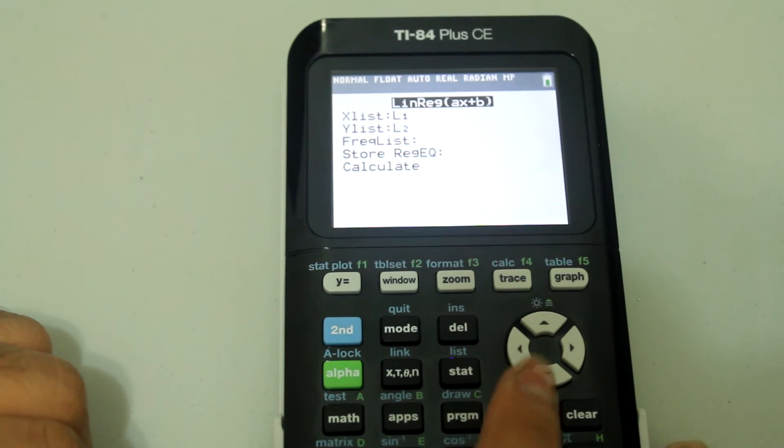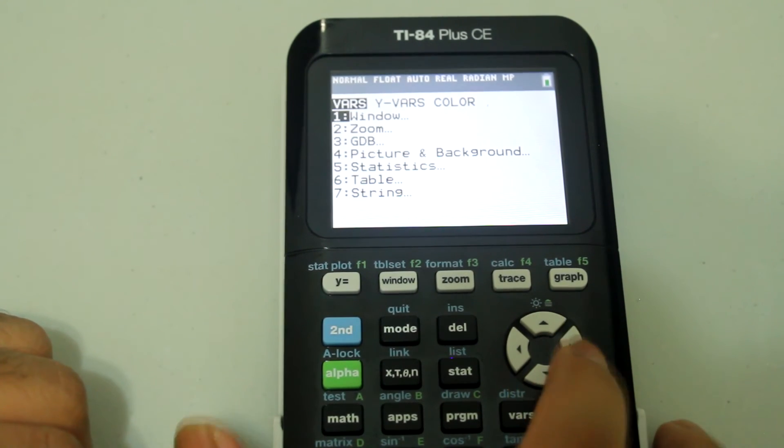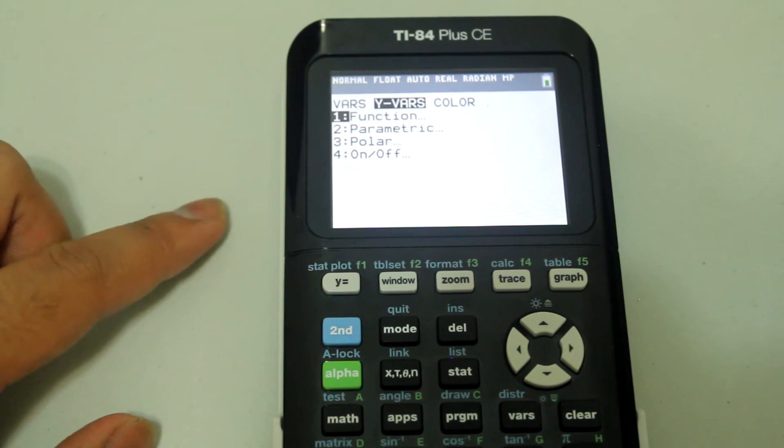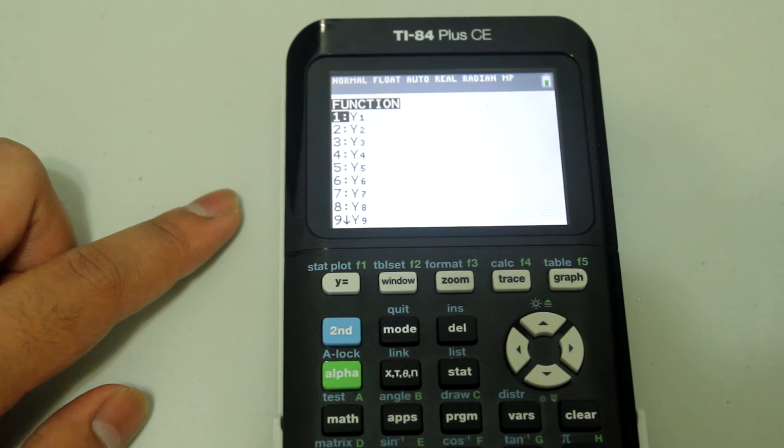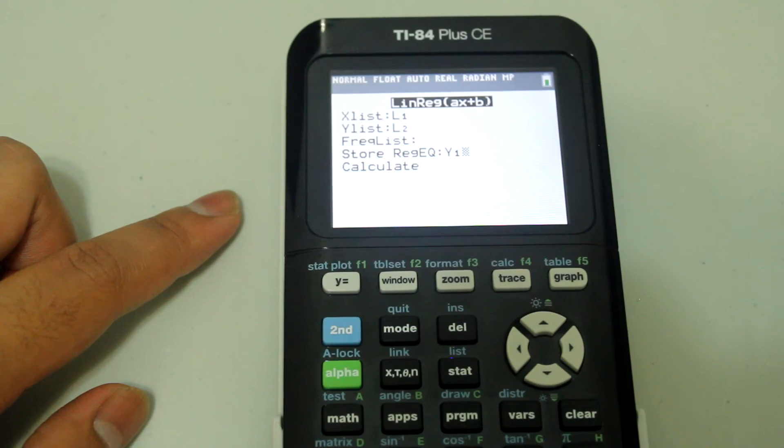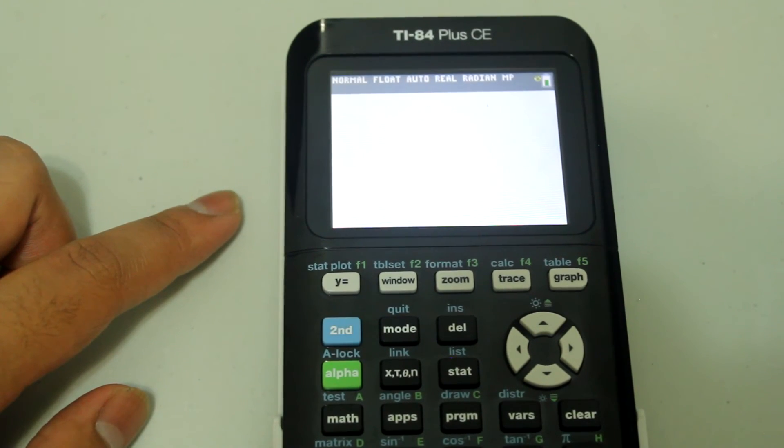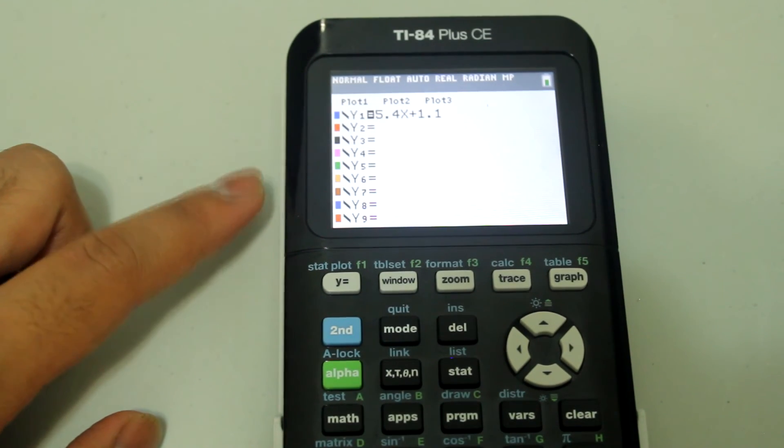Go down to that and then hit VARS and use the right arrow to go to Y VARS and either use one or enter to select function. After that, select Y1 and now just hit CALC. And if you go to Y equals, now you see that the equation is entered in Y1.